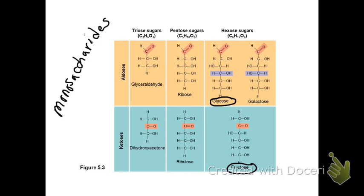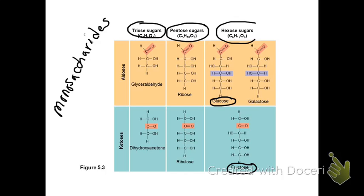Sugars that have three carbon chains are called triose sugars. Sugars that have five carbons in them are called pentose sugars. And sugars that have six carbons in them are known as hexose sugars. You need to know those terms: hexose sugars have six carbons, pentose sugars have five carbons, and triose sugars have three carbons.